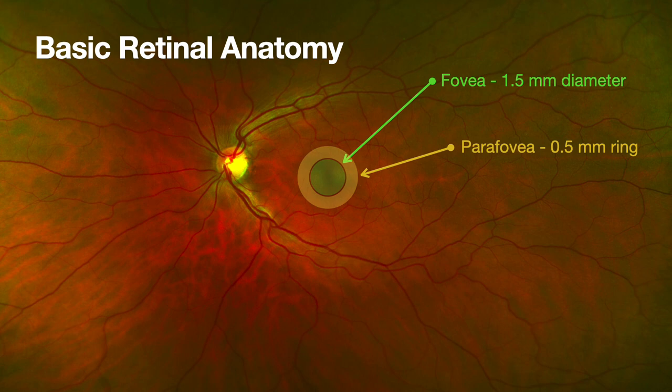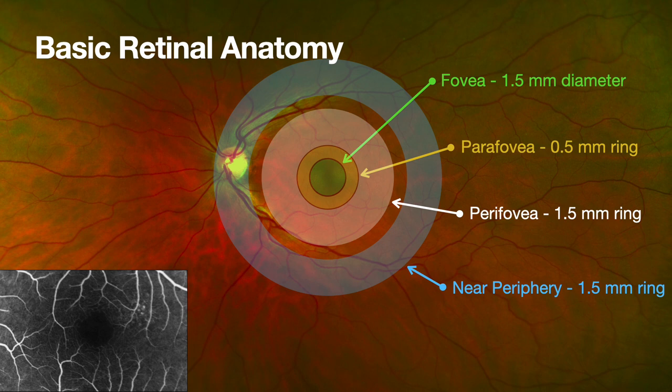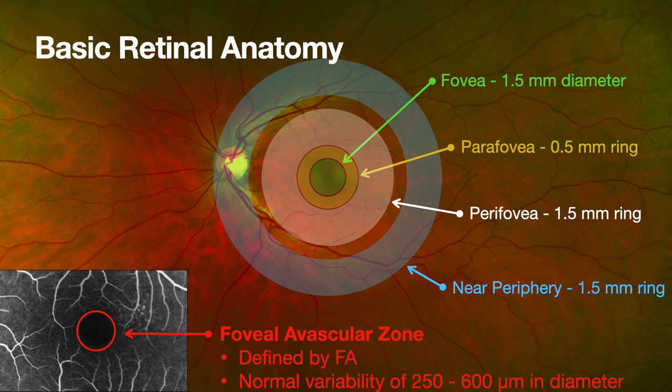The parafovea is a ring right around the fovea. We don't use these terms a lot in clinic, but they are in your book — it's useful to know. Then you've got the perifovea, and right around that, the near periphery. Essentially, we're looking at ways to demarcate the retina — city, state, country kind of stuff. The foveal avascular zone is defined by FA and also by OCTA. There's tons of variability — somewhere between 250 to 600 microns in a normal patient, and diseases like diabetic retinopathy can enlarge that.